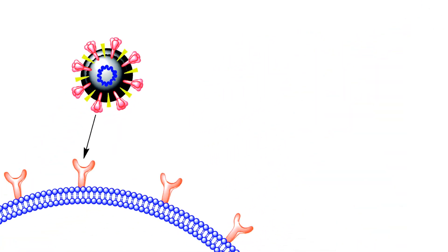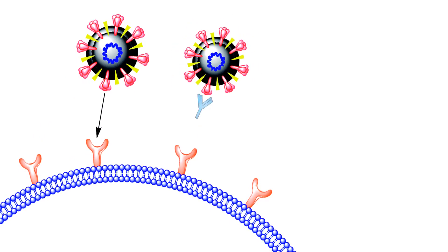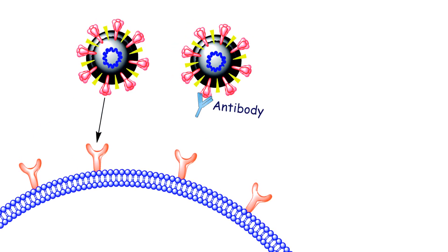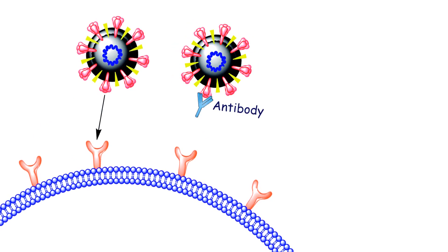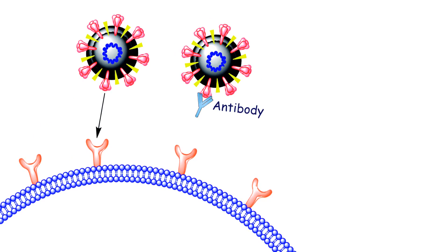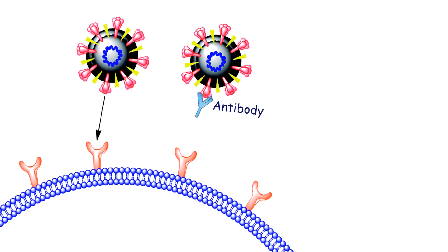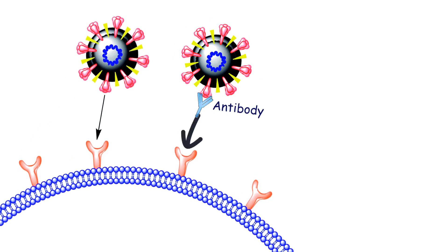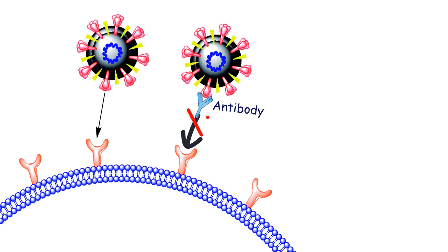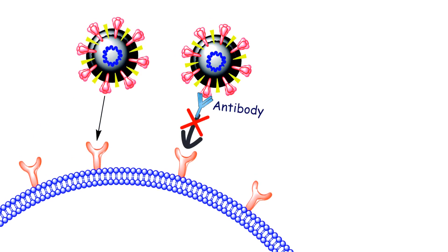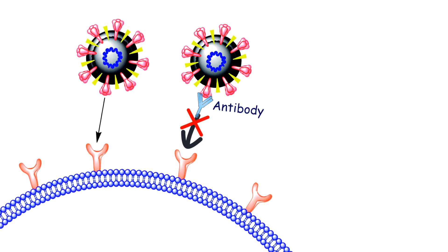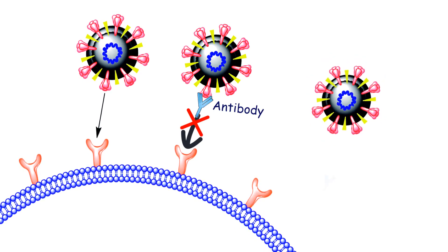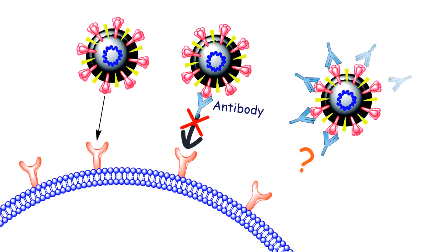An effective HIV vaccine would stimulate the production of antibodies that could bind to the gp120 spike proteins on HIV. Antibodies binding the gp120 protein would block HIV from entering the cell. However, there is more than one challenge in producing such antibodies.